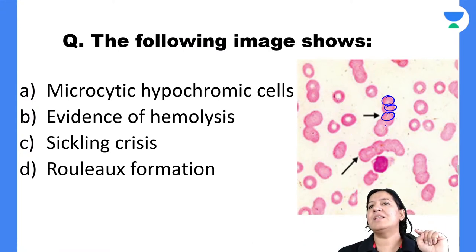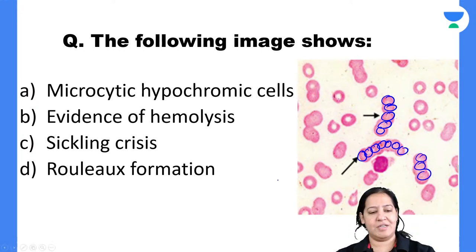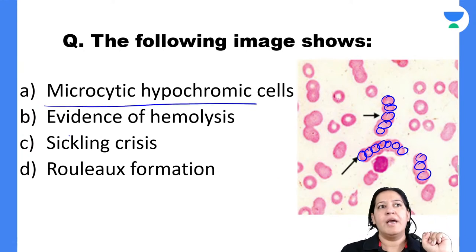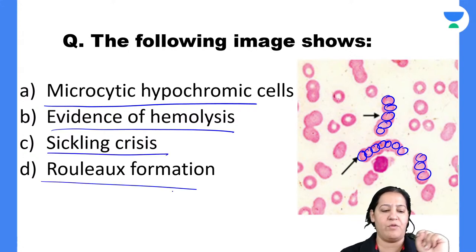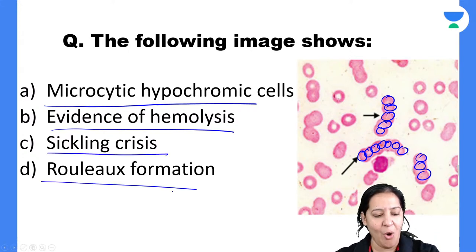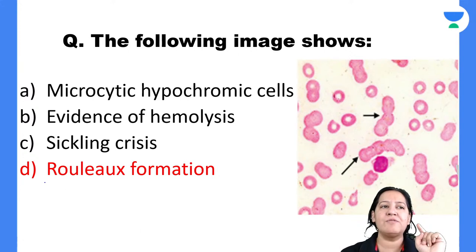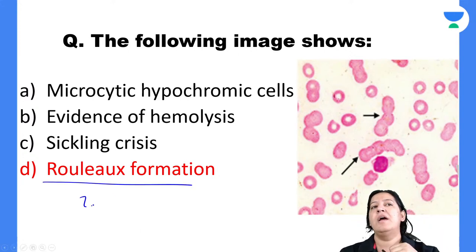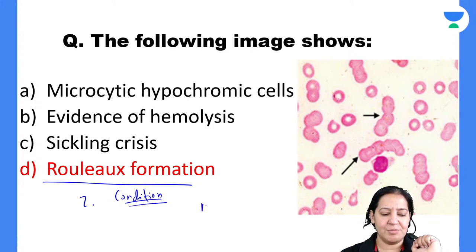Final shape question: The image shows multiple RBCs sticking to each other in a train-like structure. Options: microcytic hypochromic cells, evidence of hemolysis, sickling crisis, or rouleaux formation. The correct answer is D — rouleaux formation. This is seen in multiple myeloma. In multiple myeloma, there is mutation in B lymphocytes, which get converted into abnormal plasma cells.